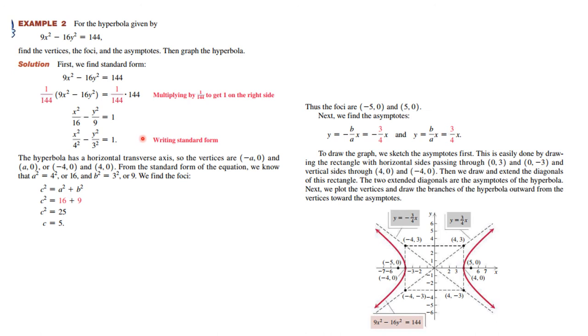So we know this is centered at 0, 0 has a horizontal transverse axis. And we know that the vertices are going to be at minus 4, 0 and 4, 0. We also know that b squared is 9. So all we have to do is find c. And so c squared is equal to a squared plus b squared. We take the square root and we get 5. That means that the foci are at minus 5, 0 and 5, 0.